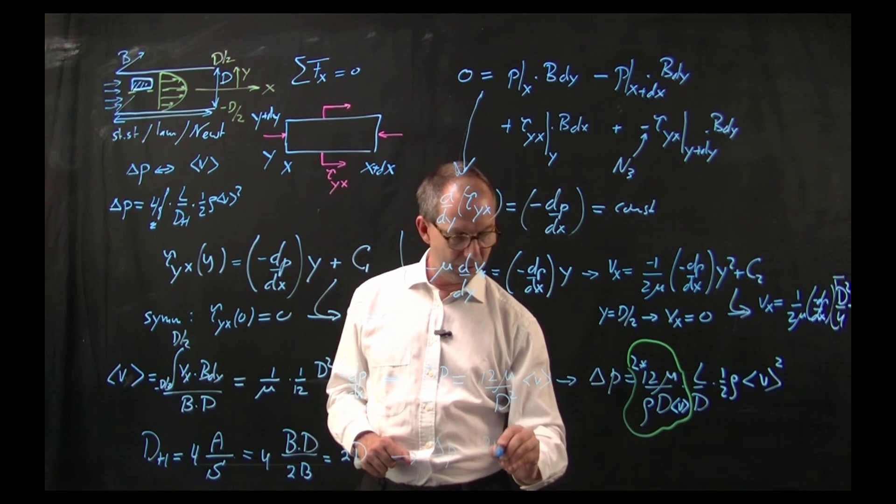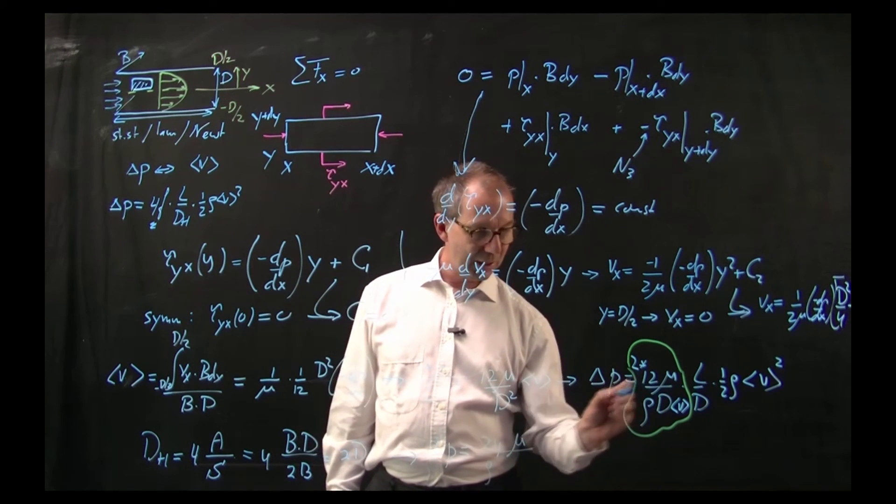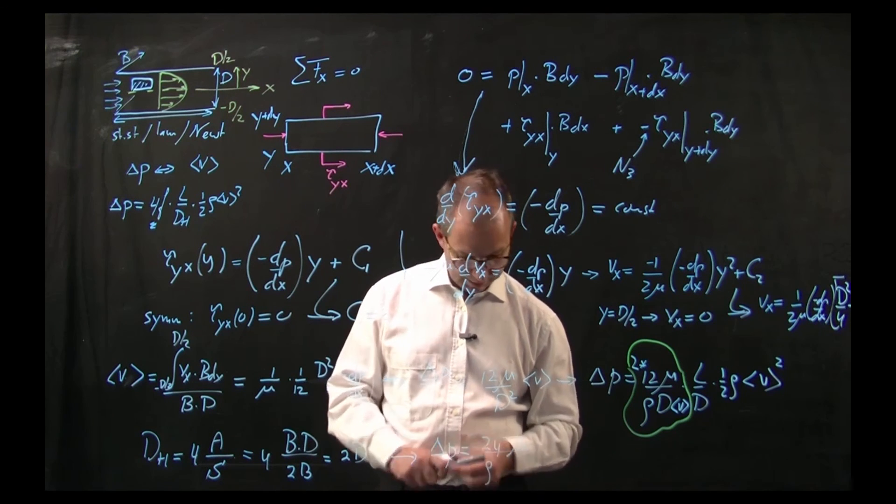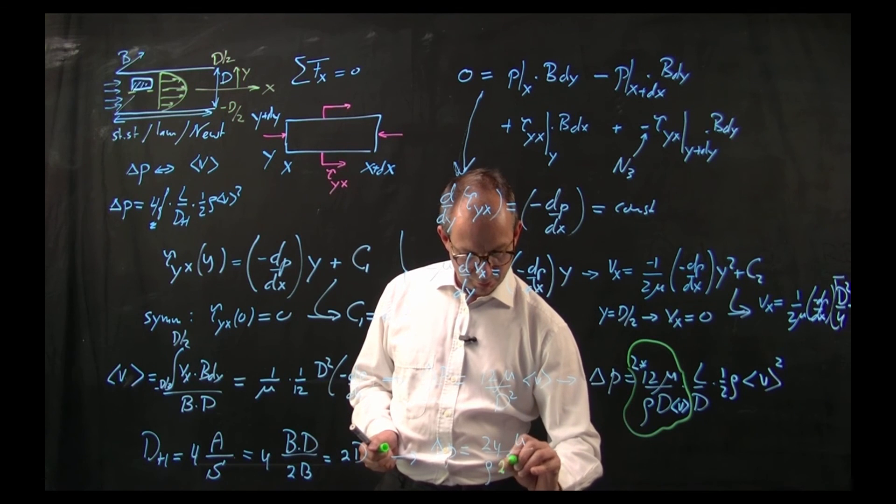And thus I need to write delta p equals, I had a 24 mu over rho. So instead of d I need to write the hydraulic diameter, so that takes up a 2. I write a 2d here. Now it's the hydraulic diameter.